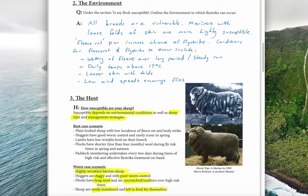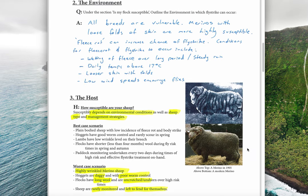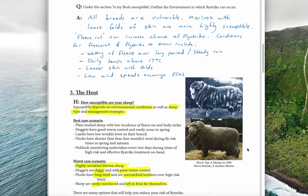If an animal has fleece rot and is not looked after, it can increase the chance of fly strike. The environmental conditions where fly strike can occur include wet fleece over a long period, steady rain, daily temperatures above 17°C, looser skin with folds, and low wind speeds. Those are the environmental conditions that cause fly strike to occur, particularly on the breech area of merino sheep.